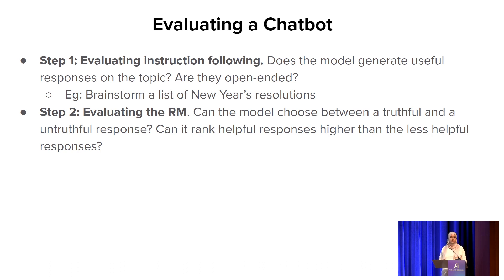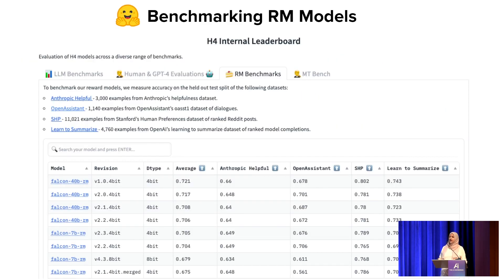But what about step two — evaluating the reward model, which is essentially a classifier that has to choose between a truthful and untruthful response, ideally rating a more helpful response higher than a less helpful one? There is really nothing publicly available, but internally our H4 team at Hugging Face, working on RLHF and training reward models, has an internal leaderboard where we benchmark reward models using open source datasets such as the Anthropic Helpful dataset and the Open Assistant dataset, with scores showing accuracy.